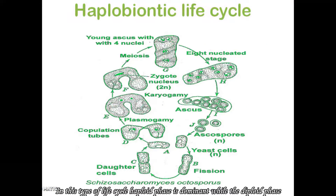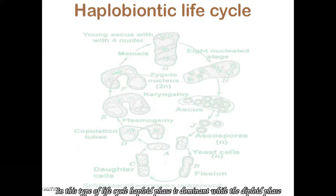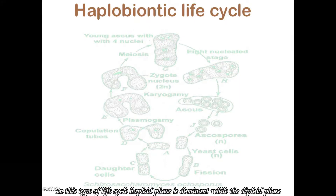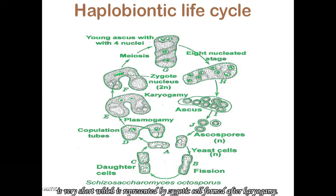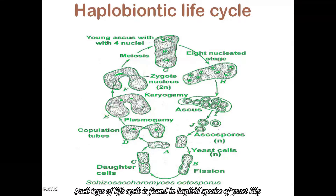In this type of life cycle, the haploid phase is dominant while the diploid phase is very short, represented by a zygotic cell formed after karyogamy. Such type of life cycle is found in haploid species of yeast like Saccharomyces octosporous.